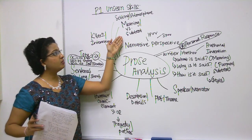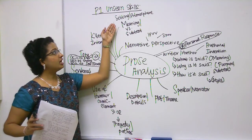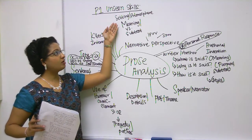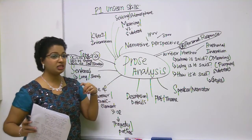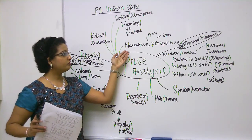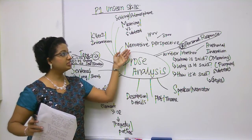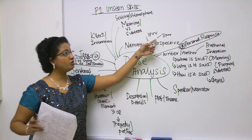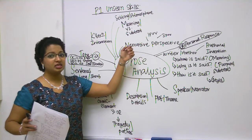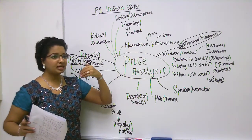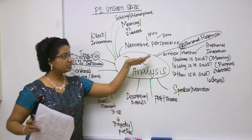Now let's look at meaning versus subtext — basically, what is the underlying message? Ask yourself how does the setting or atmosphere create an impact on you and how does it link back with the theme. We also have to consider the narrative perspective: is it in the first person point of view or the third person point of view, and how does this affect the bond established between the speaker and the readers?